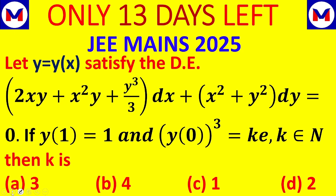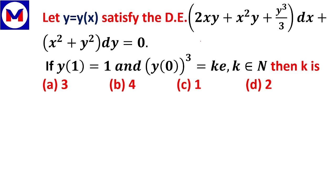Let's see the solution. Here we observe that 2xy dx with respect to x is the differential coefficient related to x²y. Similarly, x²·dy appears, and y³/3 gives y²·dy.